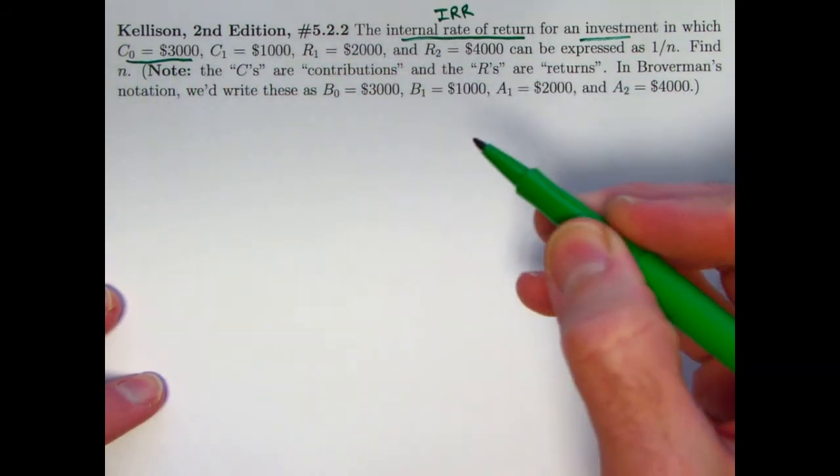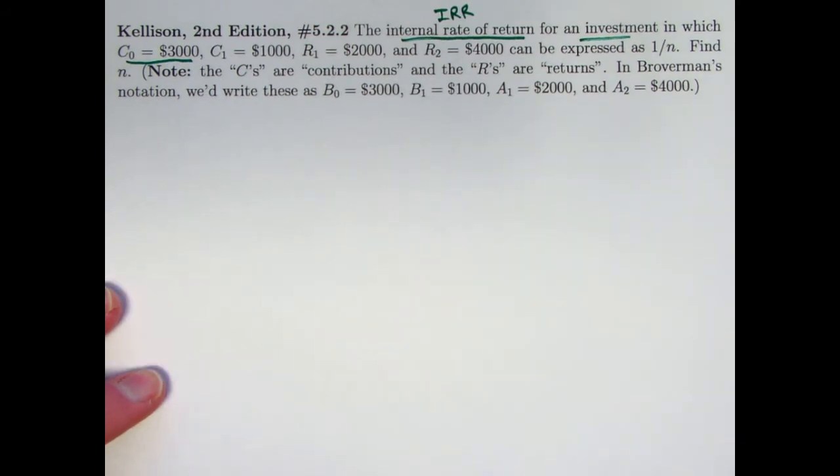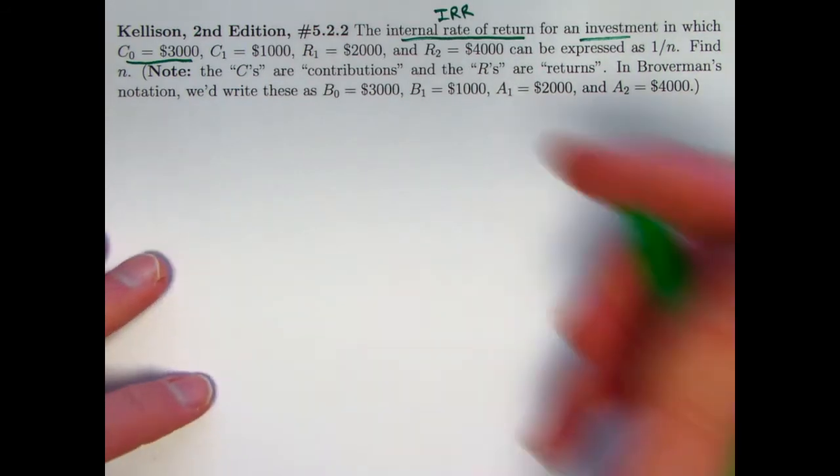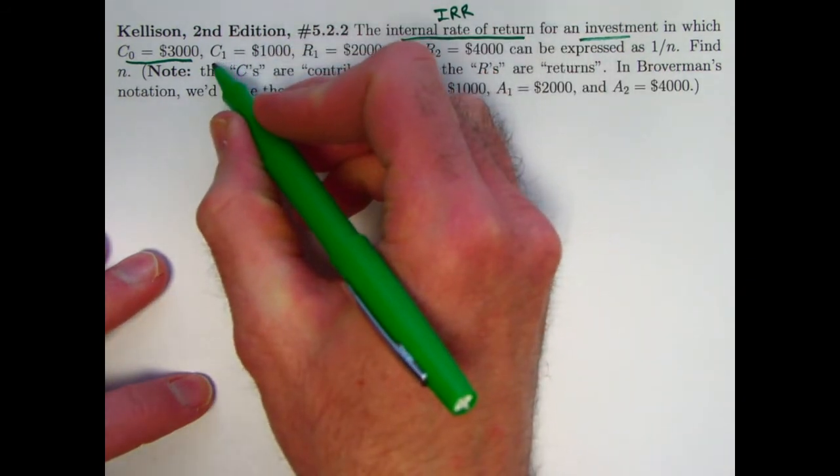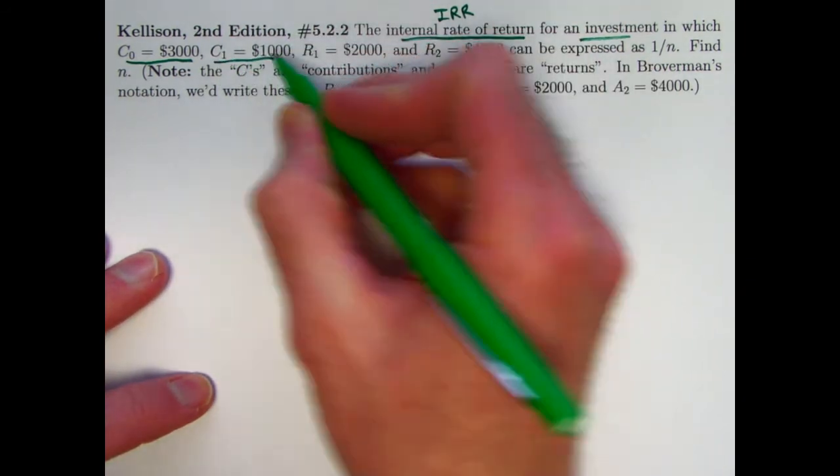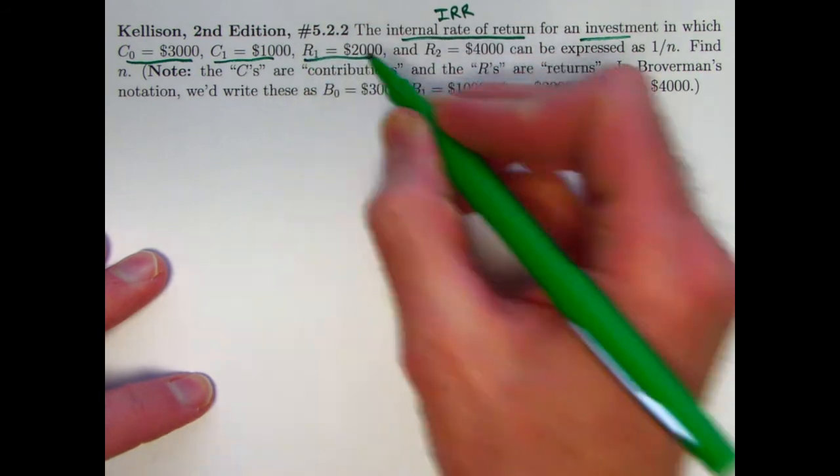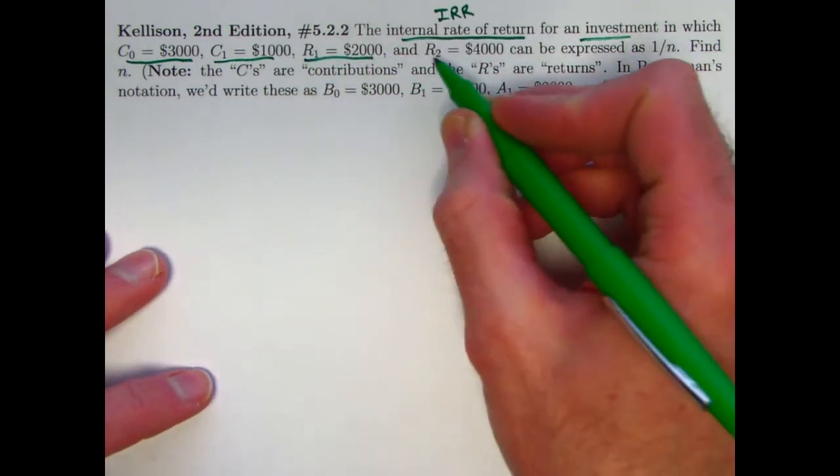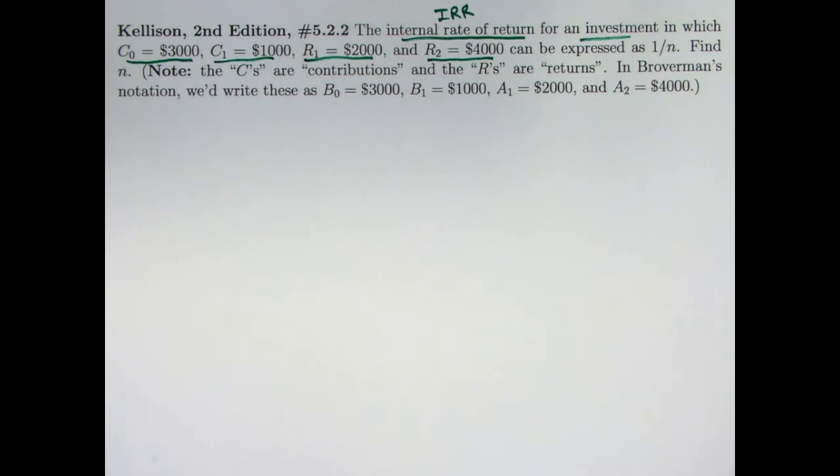...based on these contributions and returns. This is Kellison's notation. C0 is a $3,000 contribution at time zero, going from the investor to whatever the company or bank or investment the investor is loaning money to. C1 is $1,000. R1, a return, is $2,000, and a second return, R2, is $4,000. These are assumed to occur at times zero, one, and two.